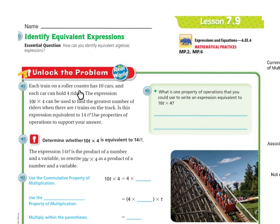Each train on a roller coaster has 10 cars, and each car can hold 4 riders. The expression 10T times 4 can be used to find the greatest number of riders when there are T trains on the track. Is this expression equivalent to 14T? Use the properties of operations to support your answer.